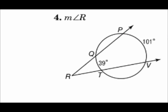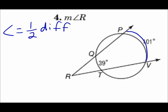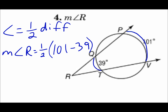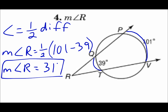On number four, the intersection is outside the circle. For that formula, the angle is half of the difference of the arcs — the arcs that the angle opens up to. I know those numbers, so the measure of angle R is half of the difference: the greater one minus the lesser one. Half of 101 minus 39 is half of 62, which is 31 degrees. When the intersection is outside the circle, the angle is half the difference.